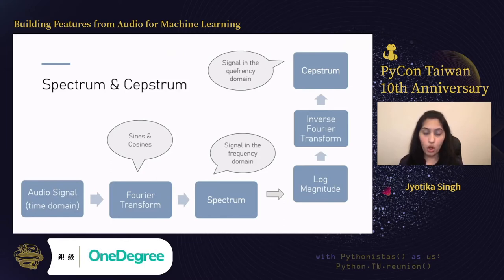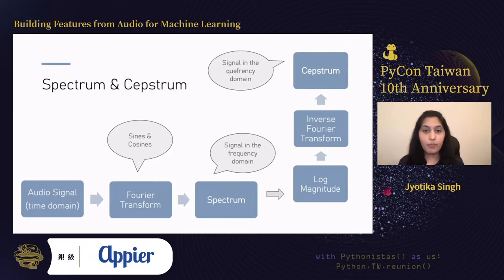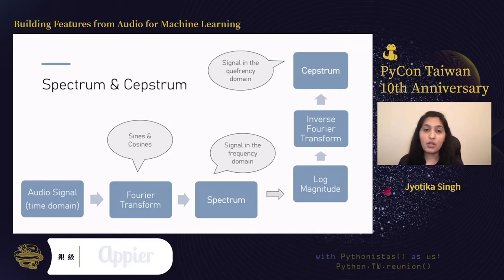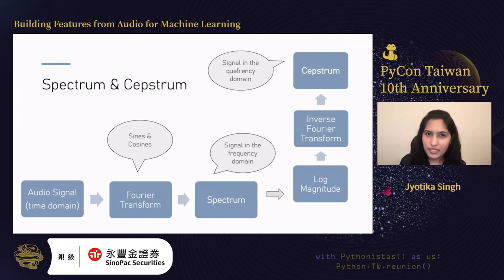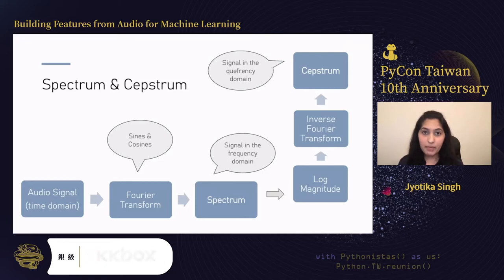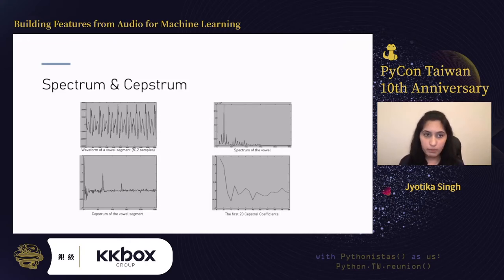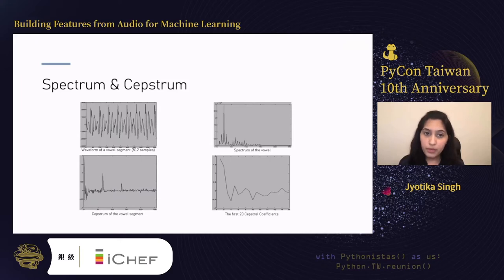If I take the spectrum and pass it through log magnitude to reduce amplitude differences, followed by an inverse Fourier transform, what I get is the cepstrum. The cepstrum is not in the frequency domain and not in the time domain — because we took the inverse Fourier transform and also took log magnitude before that, it is neither. This domain is called the quefrency domain. Cepstrum and spectrum both help extract very meaningful information from audio. The first 20, sometimes 13, cepstral coefficients are popularly used as features in machine learning models.